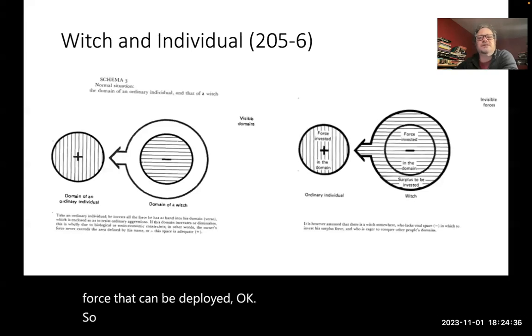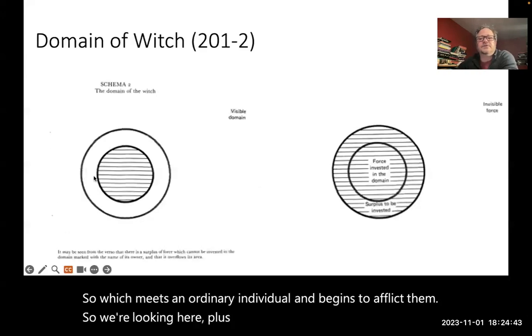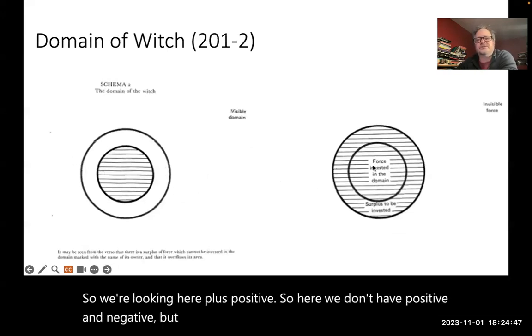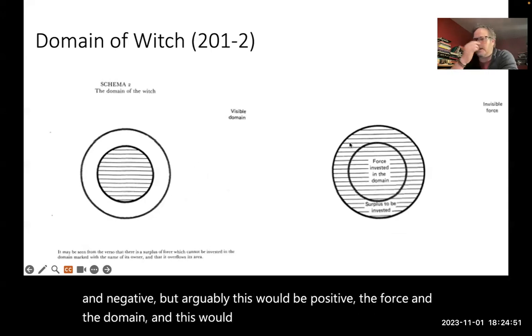So a witch meets an ordinary individual and begins to afflict them. So we're looking here, plus positive. Here, we don't have positive and negative, but arguably, this would be positive, the force in the domain, and this would be negative, the exterior force, the force that's going to go out.